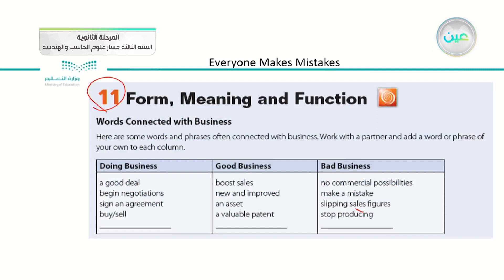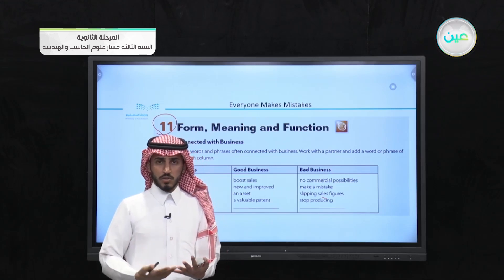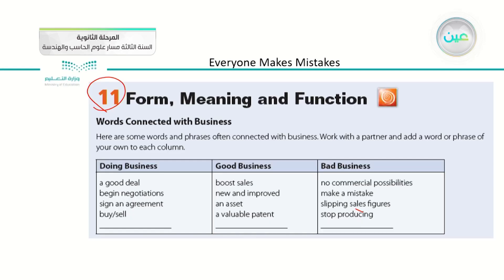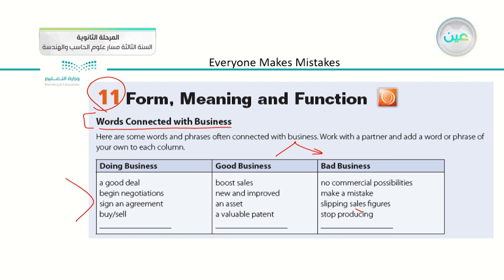Today we have the eleventh skill in this unit, which is form, meaning, and function. In this lesson, we learn some grammatical rules, we learn some vocabulary, and we try to work them together. Firstly, we will focus on words connected with business. There are three categories of business we are going to focus on. Number one: doing business — any kind of business.